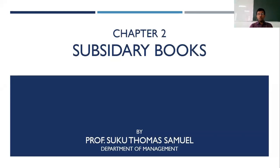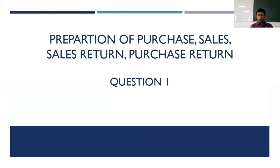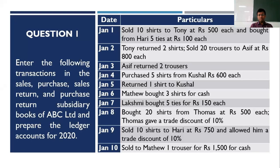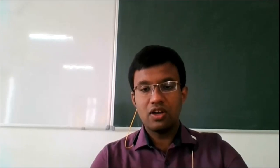Now we would be learning how to go about with the preparation of these subsidiary books. As part of the first question, we would be learning the preparation of purchase, sales, purchase return, and sales return subsidiary books. The question asks us to enter the following transactions in these four subsidiary books of ABC Limited for 2020.